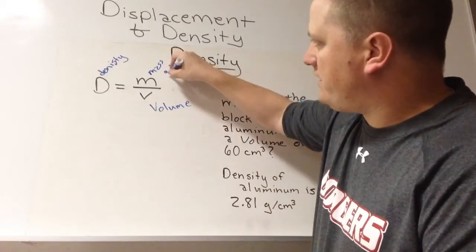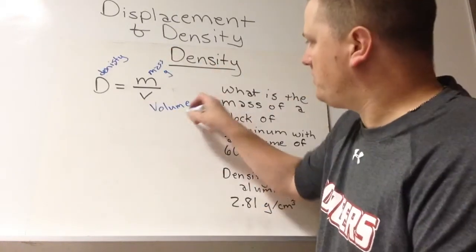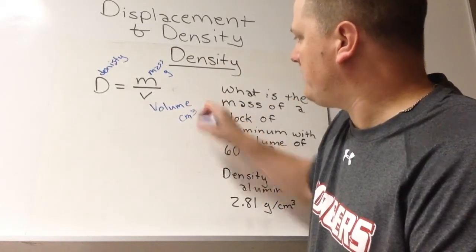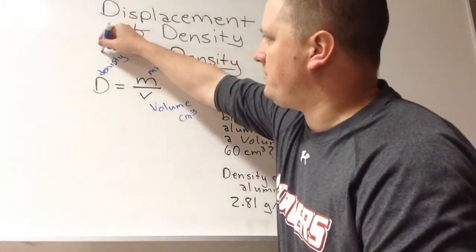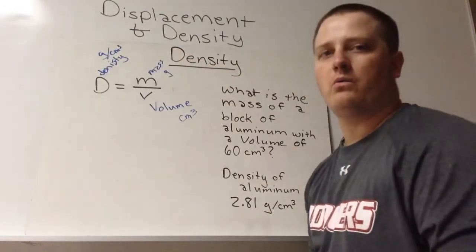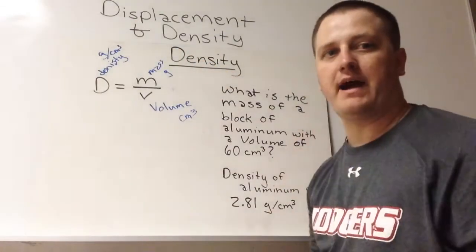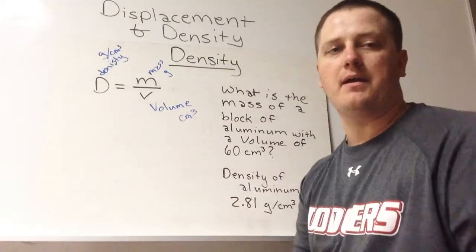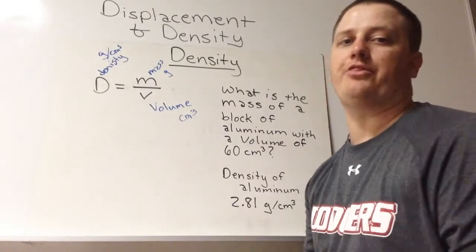Mass is measured in grams, volume is measured in cubic centimeters, and density is measured in grams per cubic centimeter. What we do is we just need to find two of these so that we can mathematically figure out the third one.